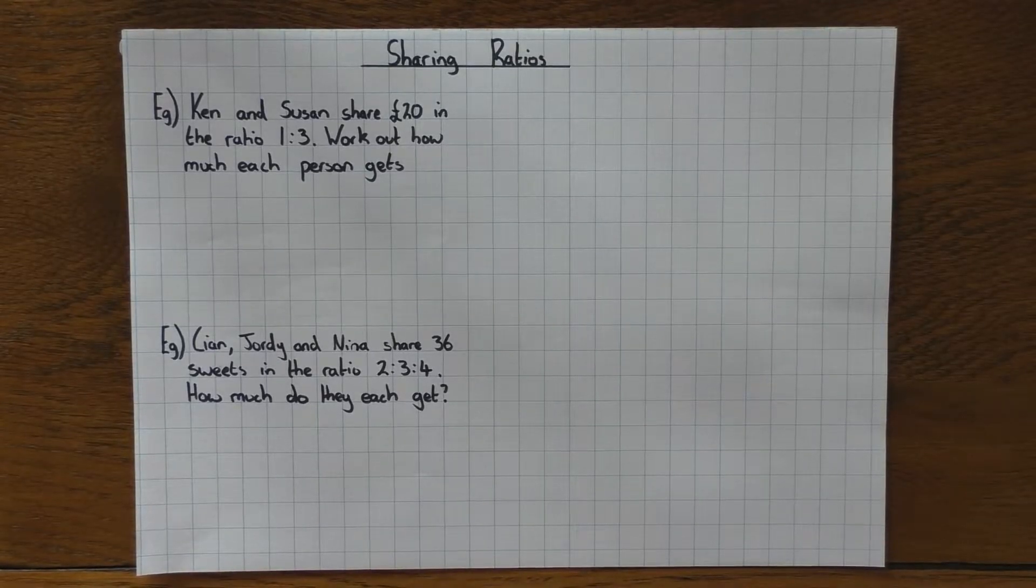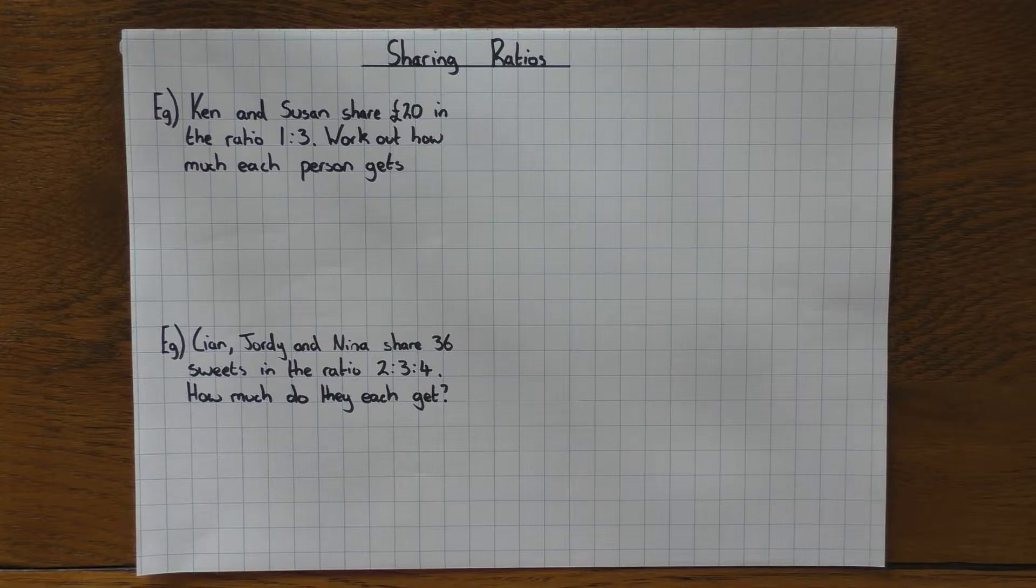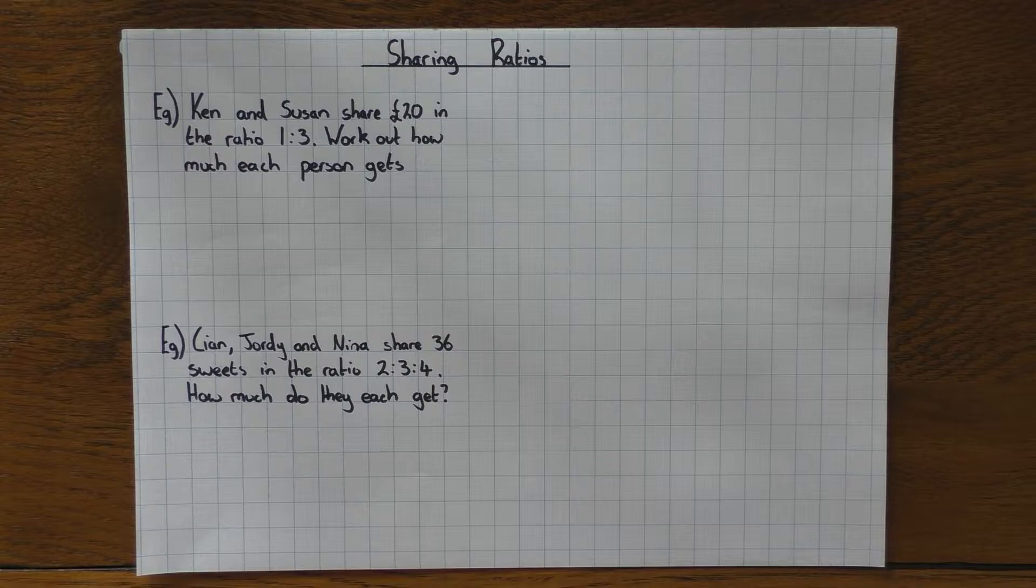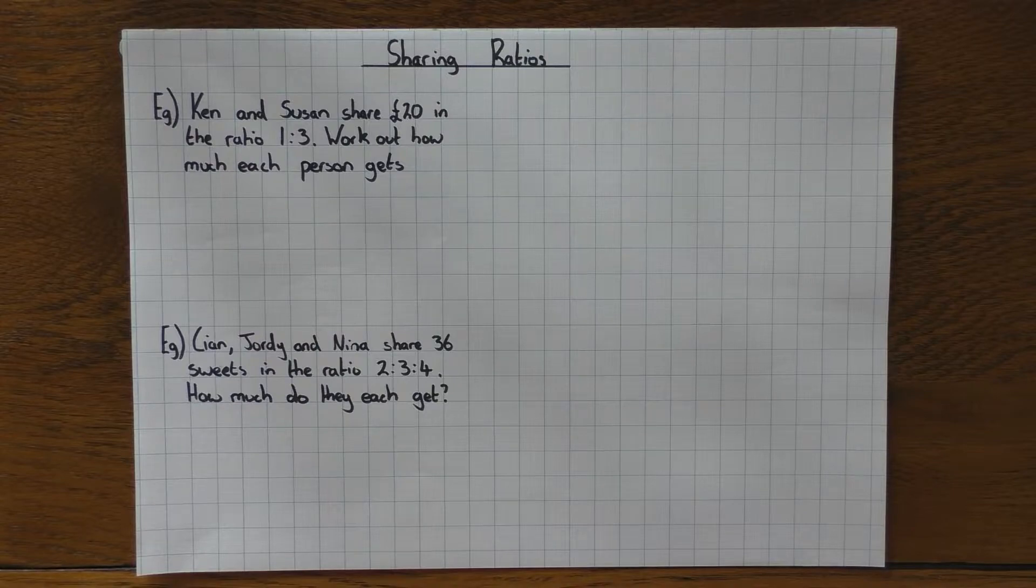Hi guys, in this video we're going to look at how we share in given ratios. There's a few different types of questions they can ask here, but the solution or the working is always the same. For me, I always stick the ratio into a table. This makes everything easy to see what's going on and can sometimes make a potentially confusing question quite easy.